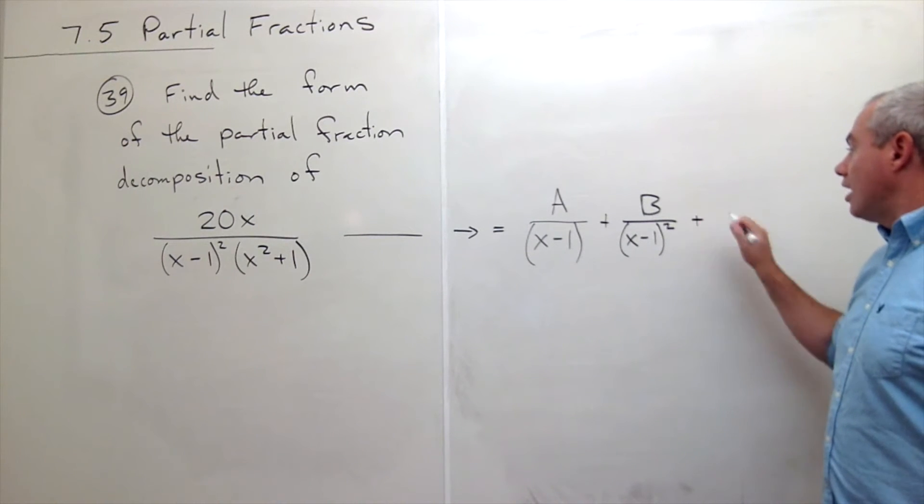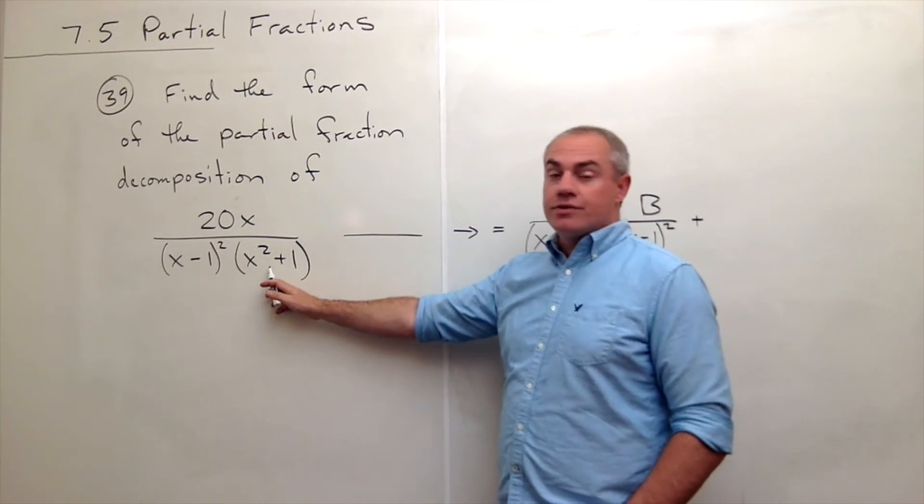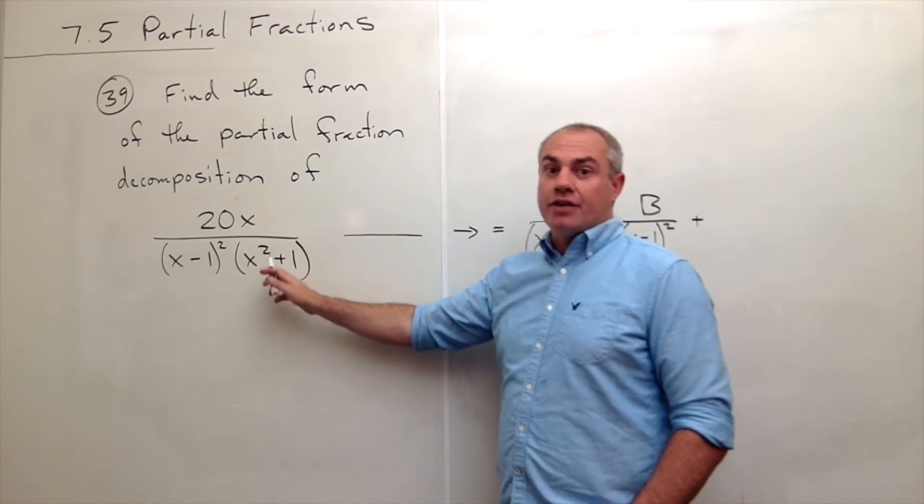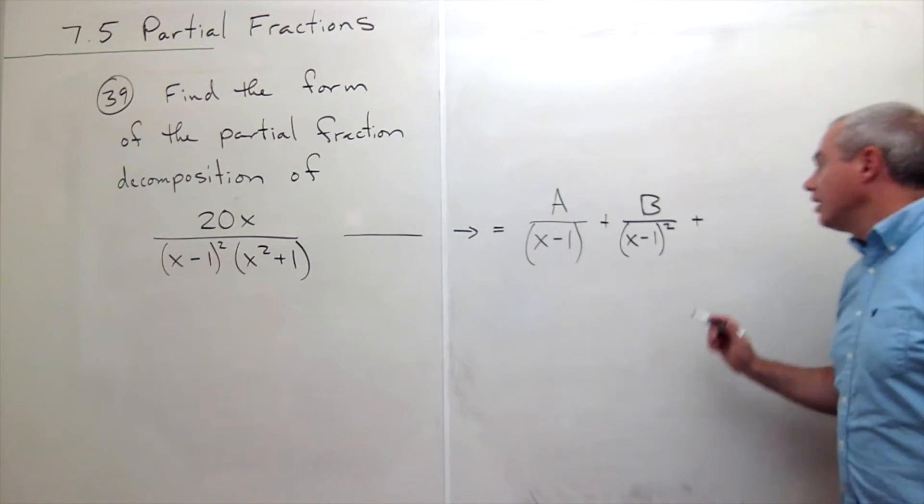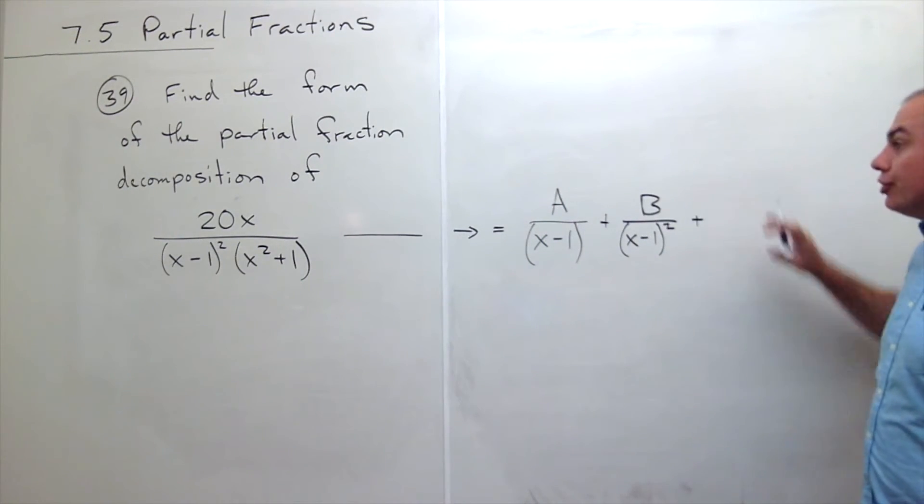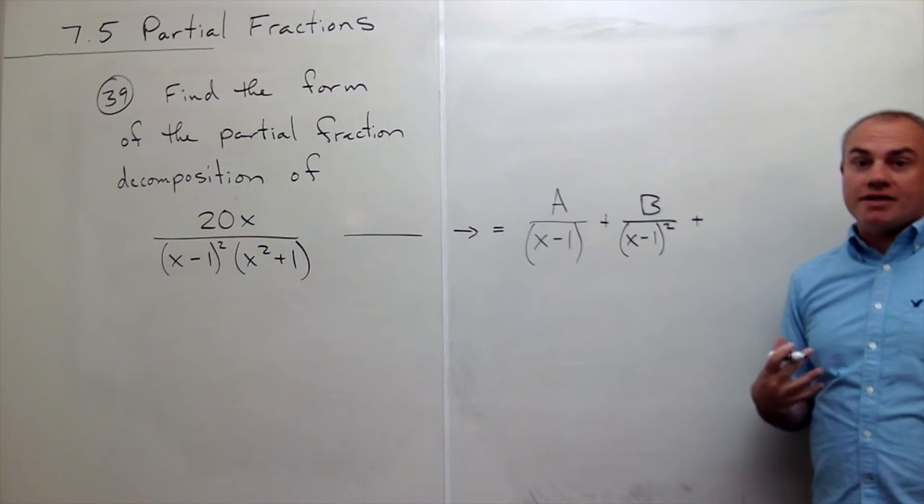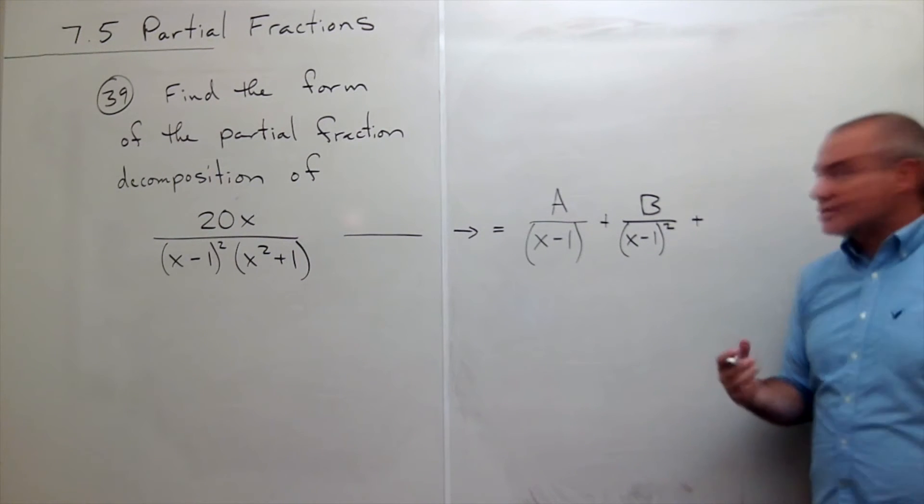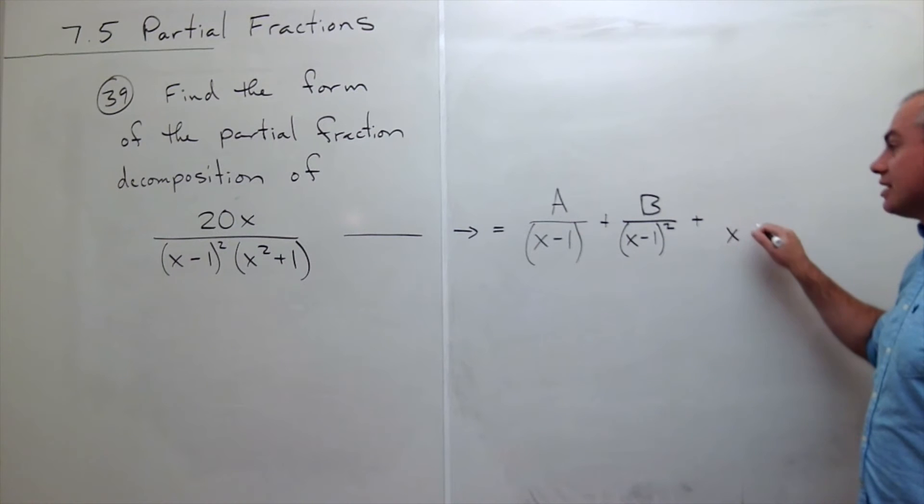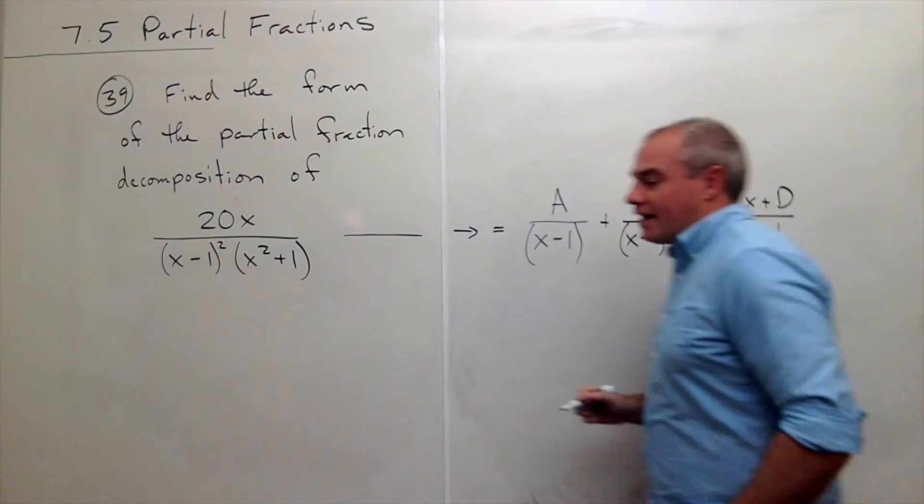Plus a fraction for the irreducible quadratic. Now, the irreducible quadratic, the numerator of this fraction, could possibly contain an x. The bottom is x²+1, but the top could be cx+d. So we have to account for that.